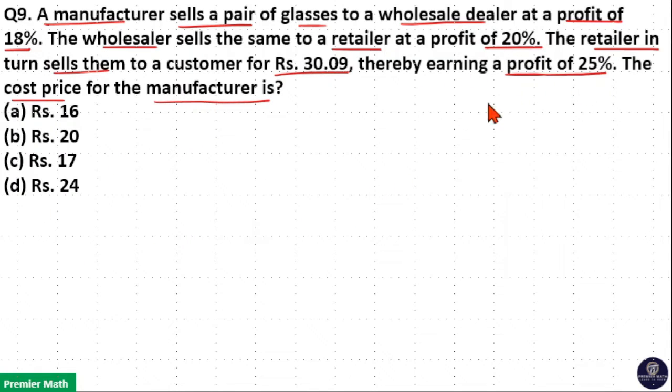Here either you take the successive discount of these three profits or take the ratio and then multiply together. Here first profit is 18%. Profit means plus.